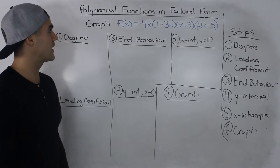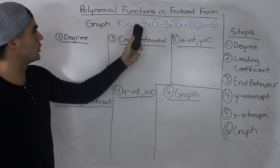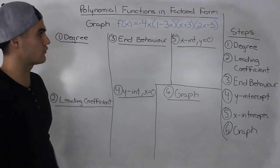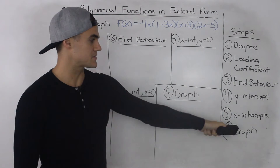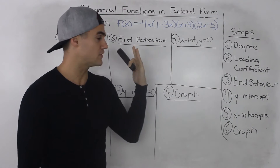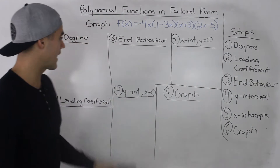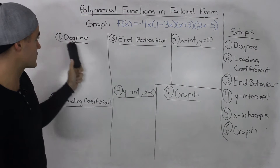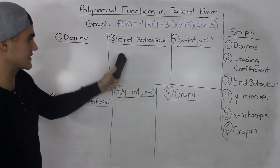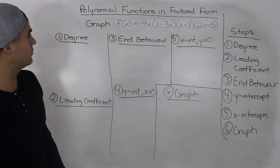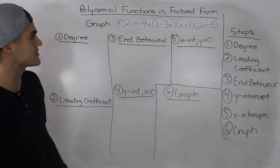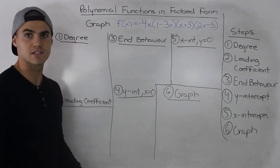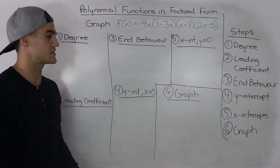In this video we're going to graph another polynomial in factored form and we're going to follow the same six steps that we followed in the previous video. I kept the template that we used for the six steps. The polynomial that we have to graph is negative 4x times 1 minus 3x times x plus 3 times 2x minus 5.